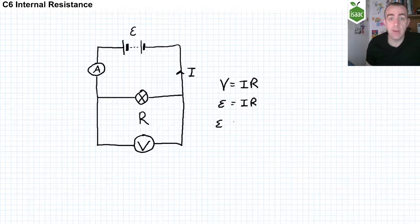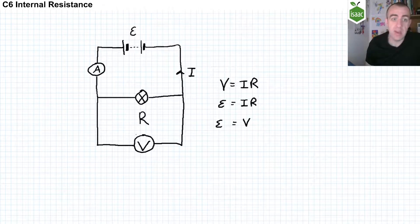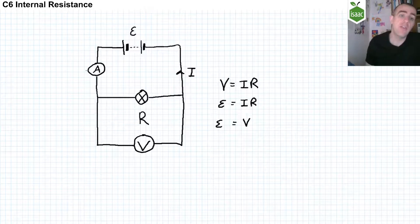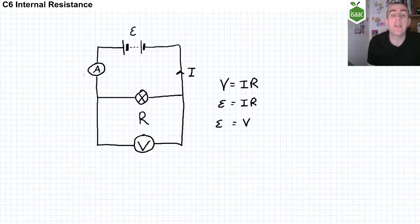Therefore, epsilon equals V. Epsilon is the potential difference across the terminals of the battery, and V is the potential difference across the lamp — they are the same thing. This assumes that the ammeter has zero ohms of resistance and the voltmeter has infinite resistance.